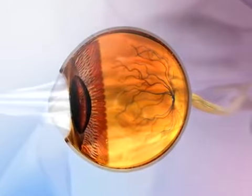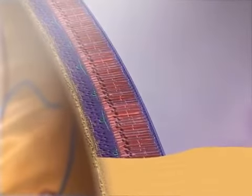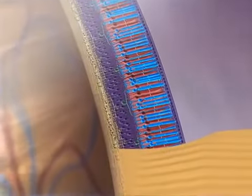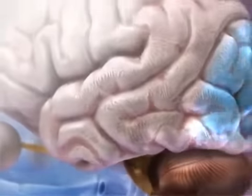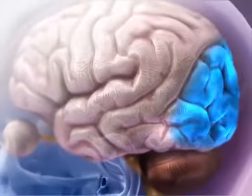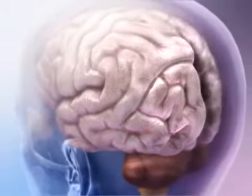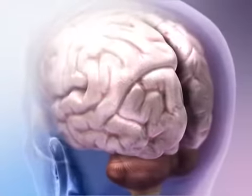The retina includes two types of nervous system cells: cones that interpret color of light waves and rods that interpret the intensity of light. These photoreceptors process information into nerve signals that travel through the optic nerve into the occipital lobe of the brain, where signals are interpreted to represent an image.